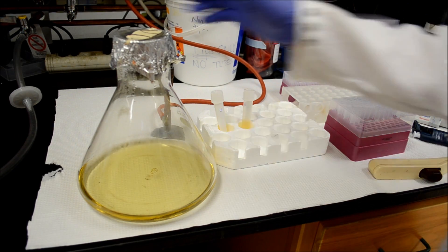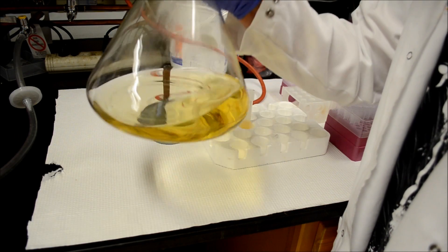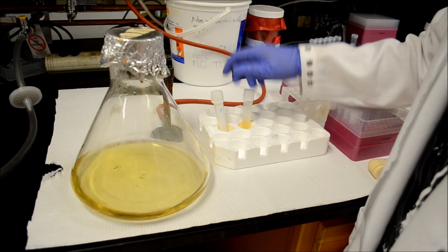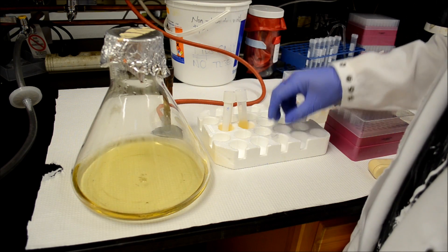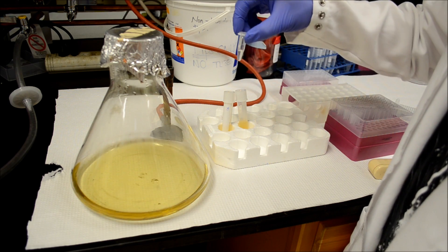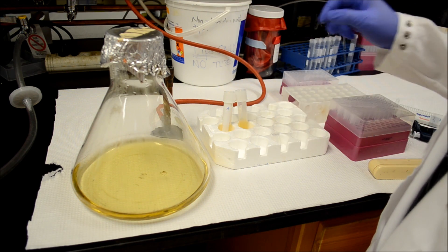Next, you have to inoculate a flask of LB media. Here's 500ml of LB, your overnight cultures, and a tube of ampicillin to make sure only your bacteria will grow.